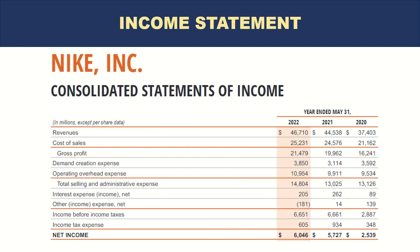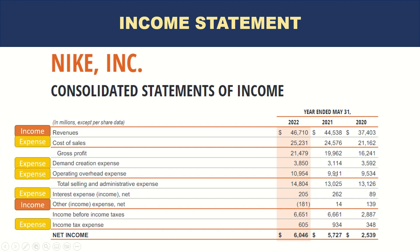Let's look at Nike's income statement. All income and expenses are listed here. Revenues and other income are the income lines — note that other income shown as a negative number in brackets indicates it is income. Everything else is an expense: cost of sales, demand creation expenses, operating expenses, interest expense, and tax expense. Finally, net income is income minus expenses. For the 12-month period ending May 31st, 2022, Nike had a net income of roughly 6 billion dollars.